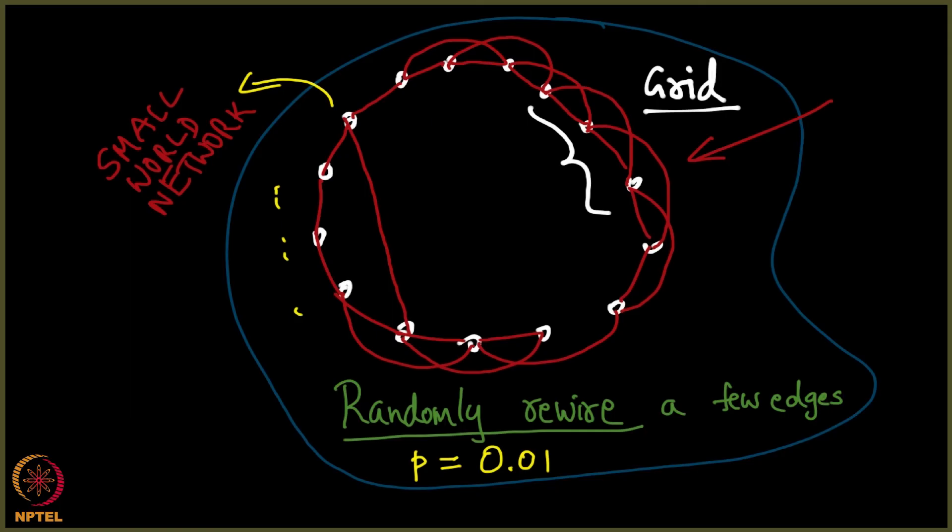This is called the Watts-Strogatz generative model. You can probably try writing a code for this and then check whether it really works the way it is shown here. You will be surprised to see that it indeed works, and that is the motivation for why the world is big yet too small.